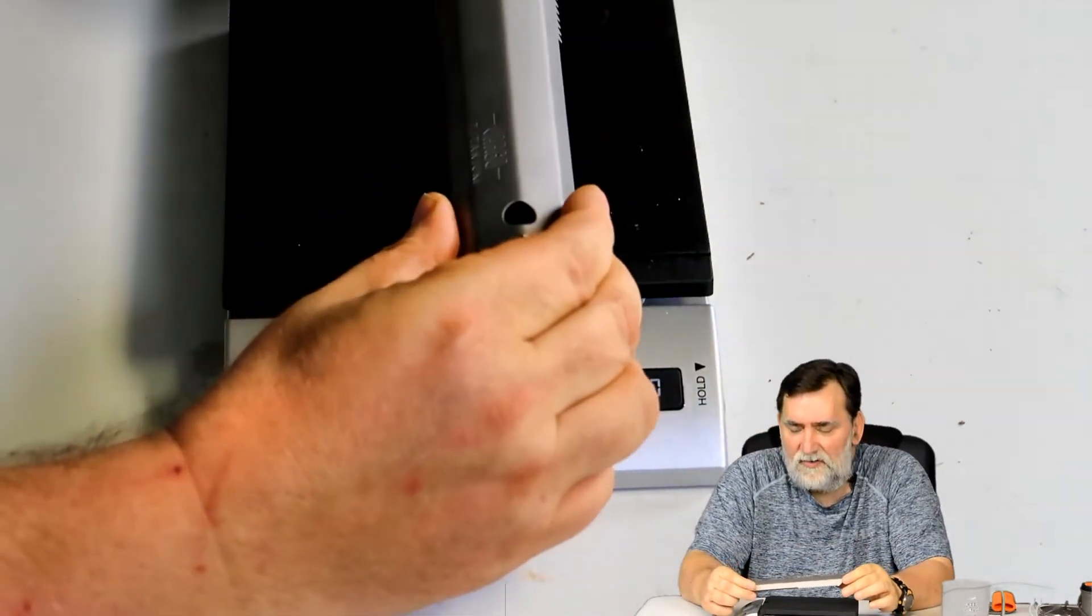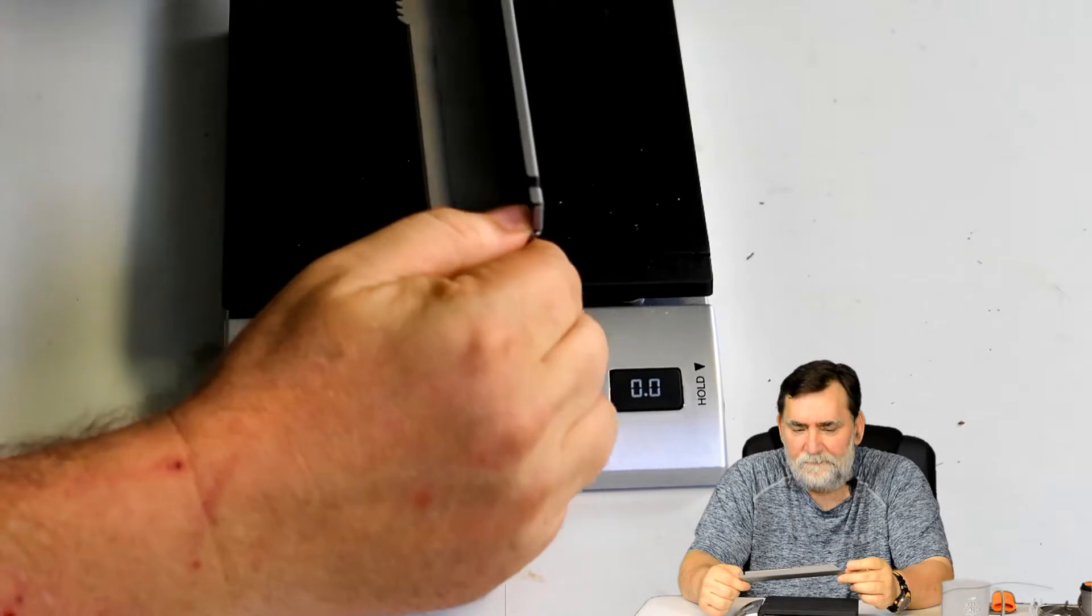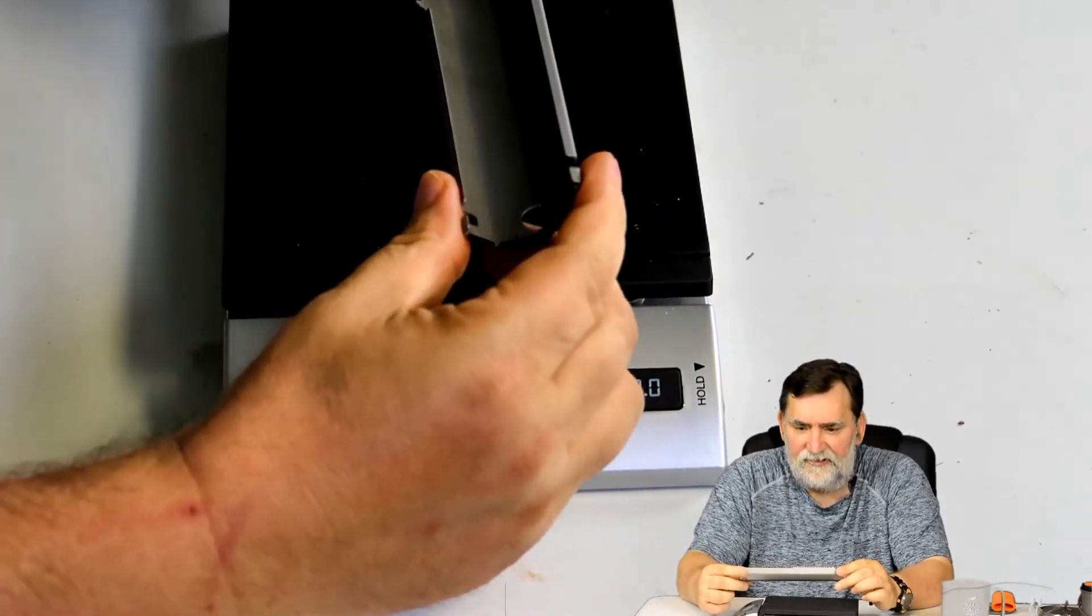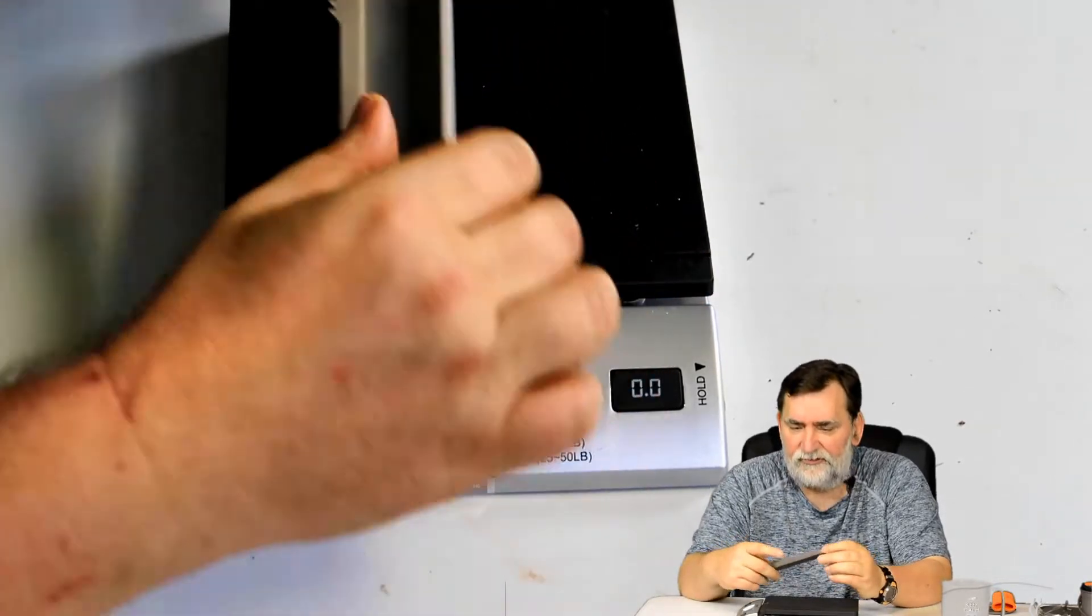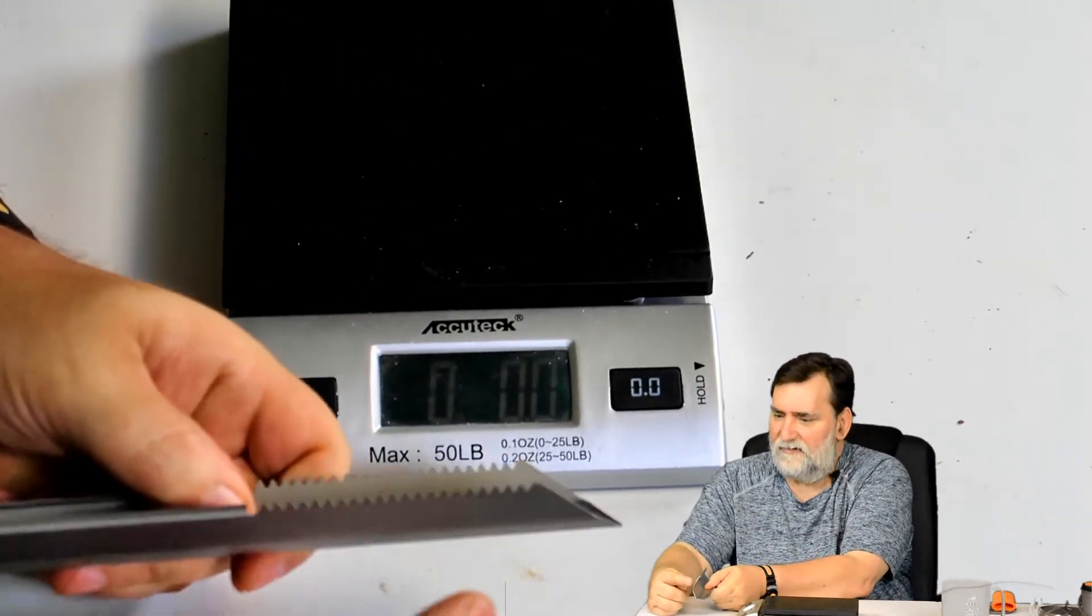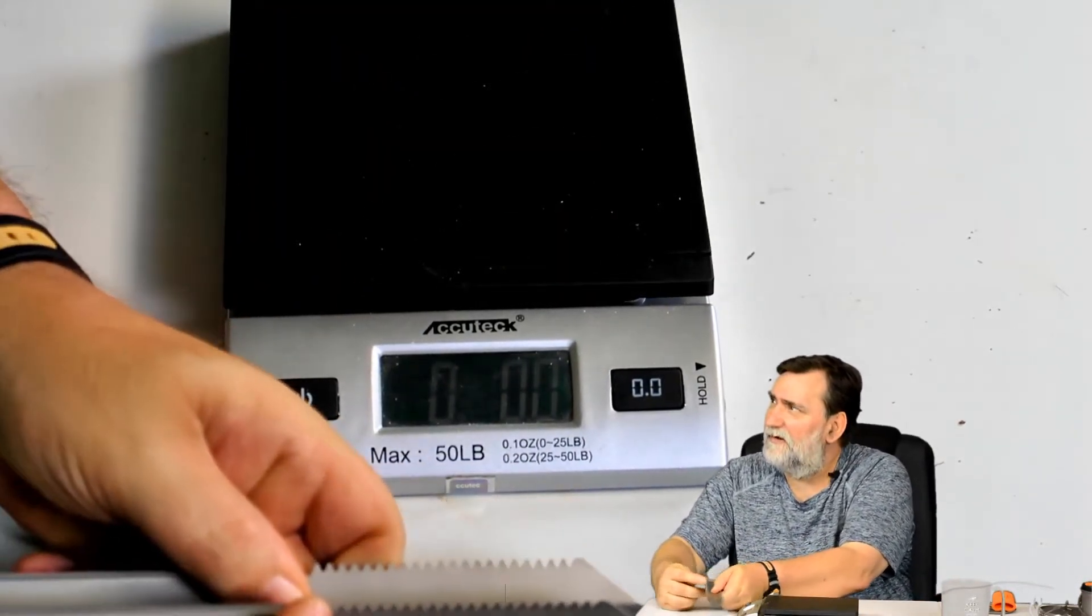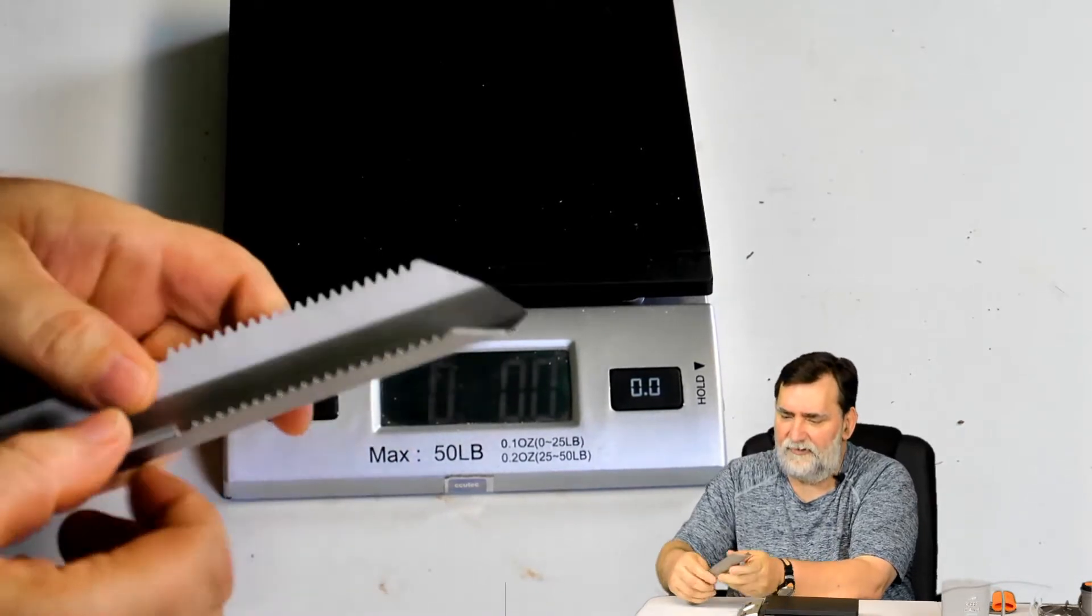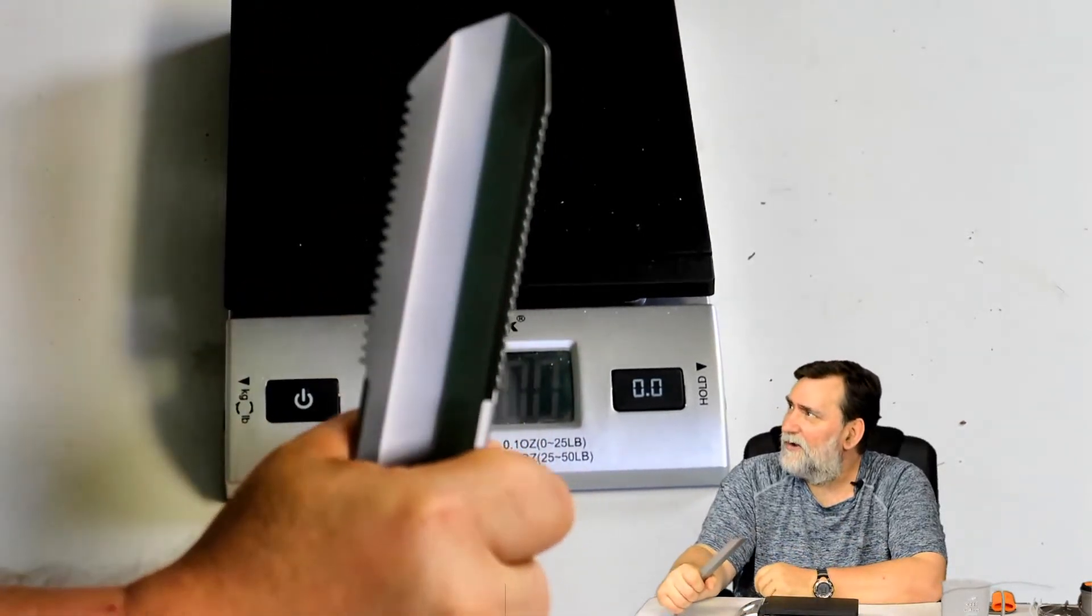This is a Vargo titanium digger. It has serrated edges all the way along here, and that's to cut the roots. You can get a really good grip on it.